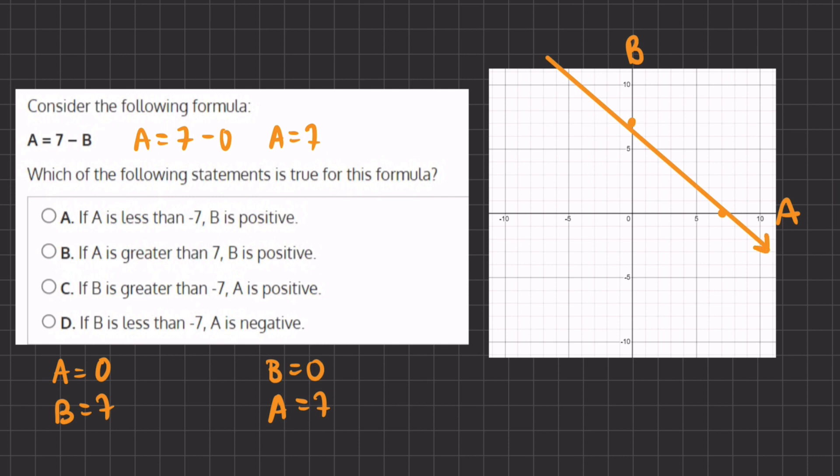All right, and now let's read our options and answers. If A is less than negative 7, B is positive. That means that if A is less than negative 7, B is always in the positive realm of the graph, which is correct. So A will be our correct answer,